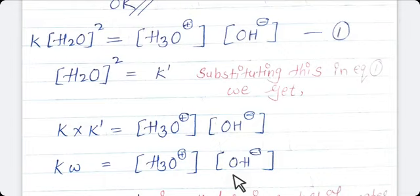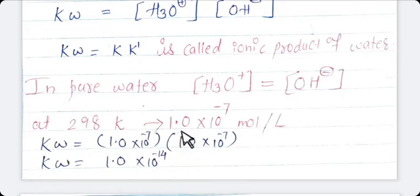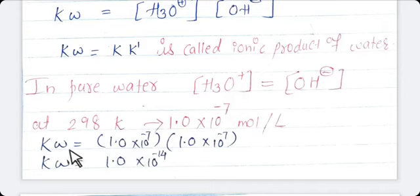Always remember: in pure water, hydronium ion concentration is always equal to hydroxyl ion concentration. H3O⁺ concentration is always equal to OH⁻ ion concentration. Thus, at 298 Kelvin, this concentration value will be 1.0 × 10⁻⁷ mole per liter. Putting this value into the formula, we get Kw = 1.0 × 10⁻⁷ × 1.0 × 10⁻⁷, so the value is 1.0 × 10⁻¹⁴. This is for pure water.